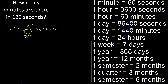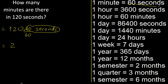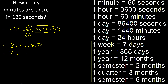60 divided by 60 is 1, ok? 120 divided by 60 is 2, ok? Here is 2. 60 seconds is 1 minute, multiply by 1 minute. 2 multiplied by 1 is 2. Finish it!